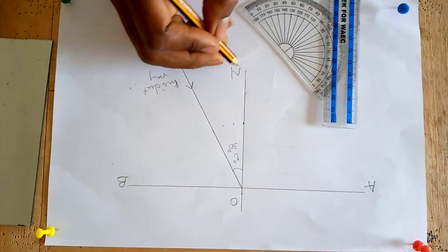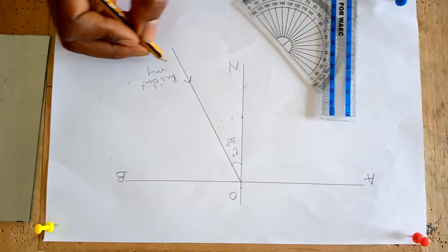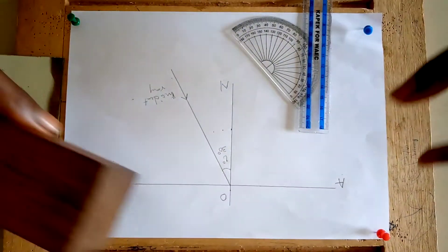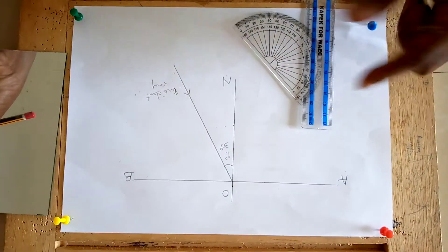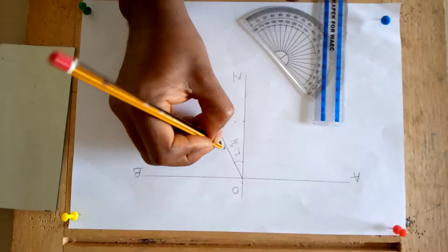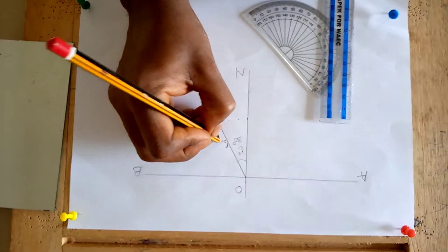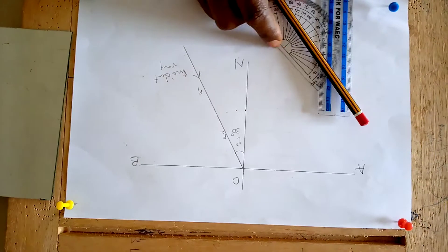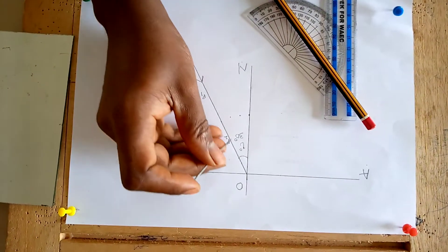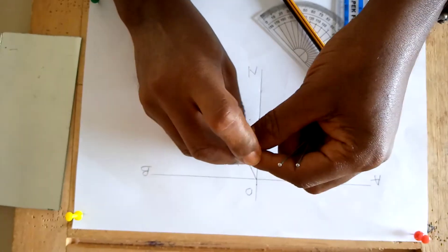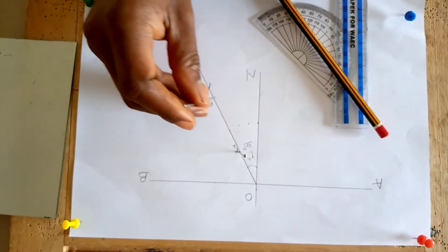Then you place your mirror. Put two pins at point P2 and P1. Make sure that they are at least four centimeters apart from each other.